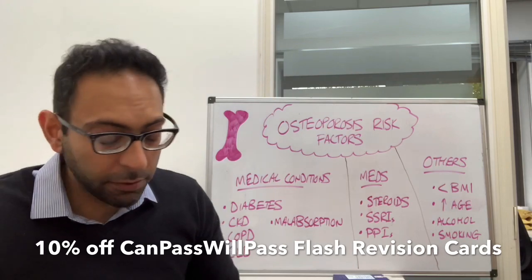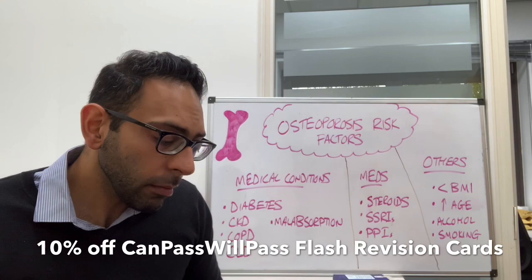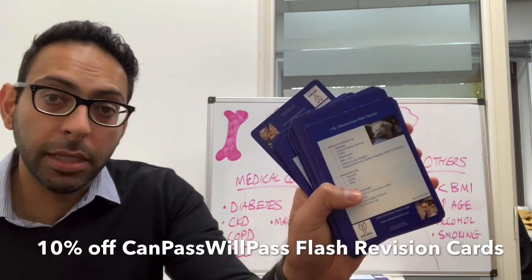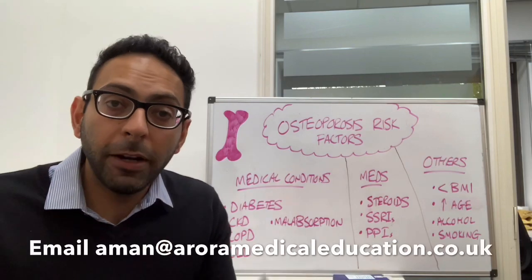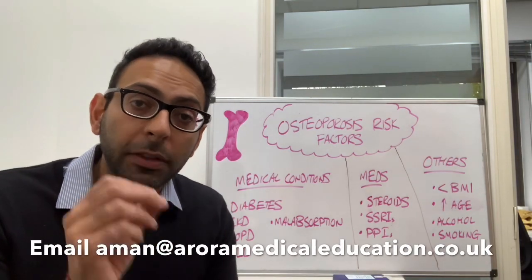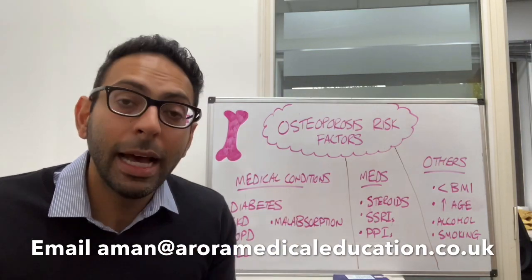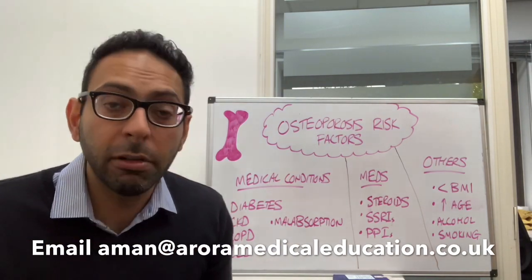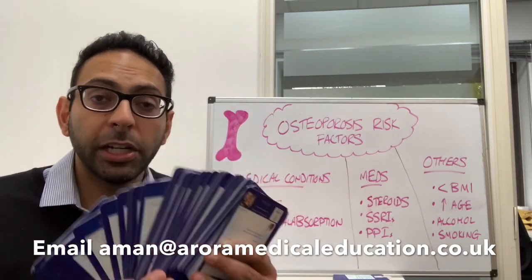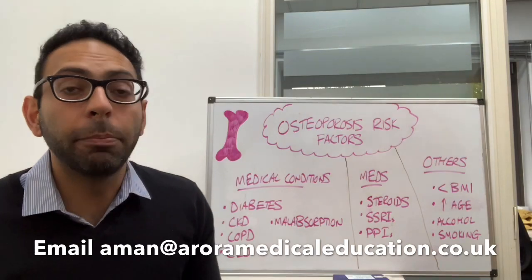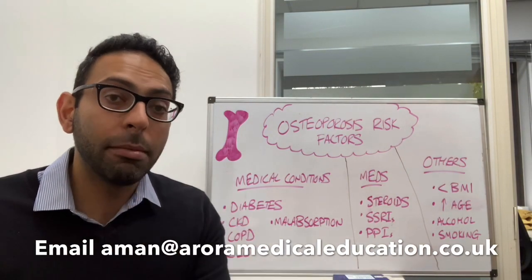The osteoporosis risk factors card, for example, is number 118. As you can see, they're all laid out here — that's the osteoporosis risk factor card there. Have a look at these on the website. If you want 10% off, send me an email at aman@auroramedicaleducation.co.uk and say 'I watched the osteoporosis risk factors video, can I have 10% off the Flash revision cards?' I guarantee they will boost your preparation and hopefully your pass in whichever medical exam you're doing.